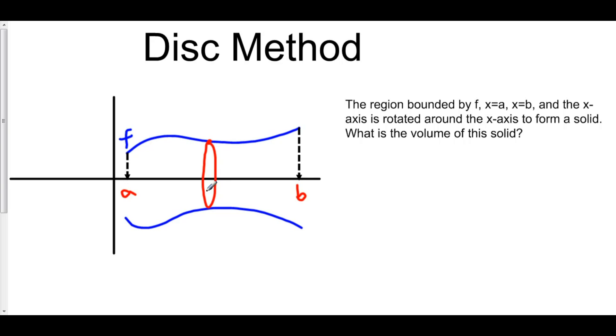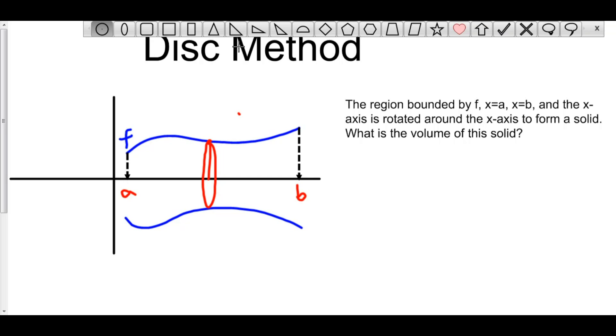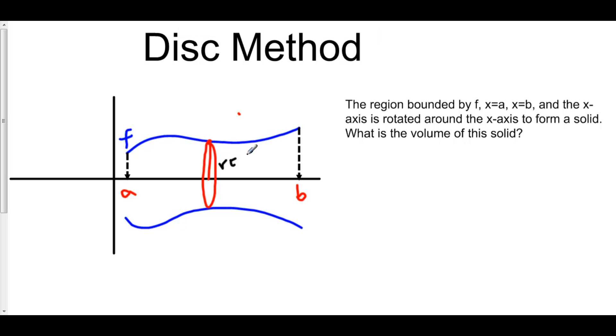So therefore, we have the same distance down here as we do up here, and the same distance is also coming out of the board and going up this way. Everything around this circle is equidistant from the x-axis. Moreover, the radius of this circle is just the distance from the x-axis to the function f. Well, that means that our radius is equal to the actual function value itself, that is f of x.